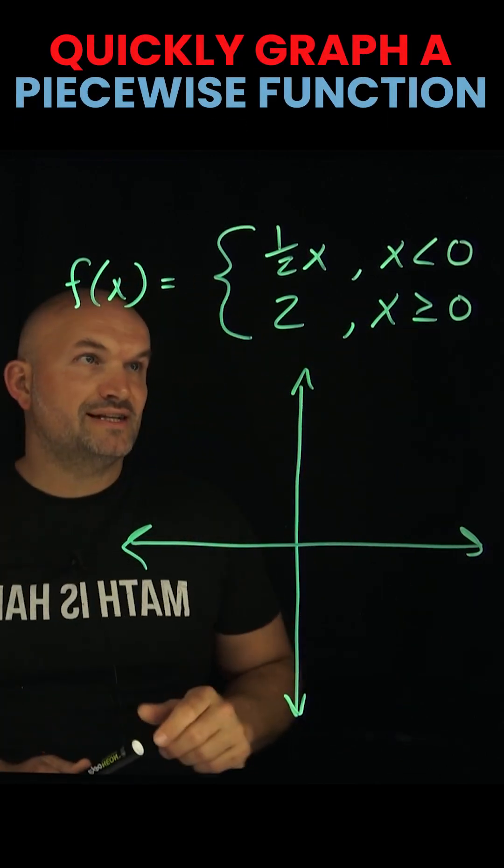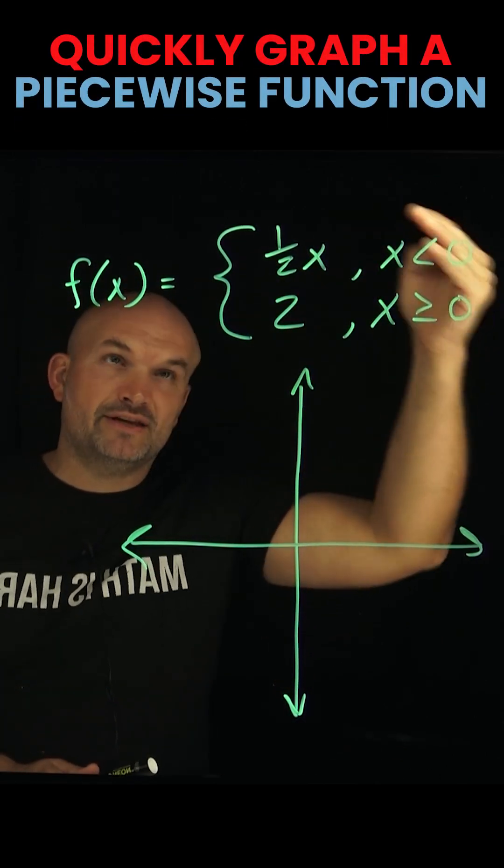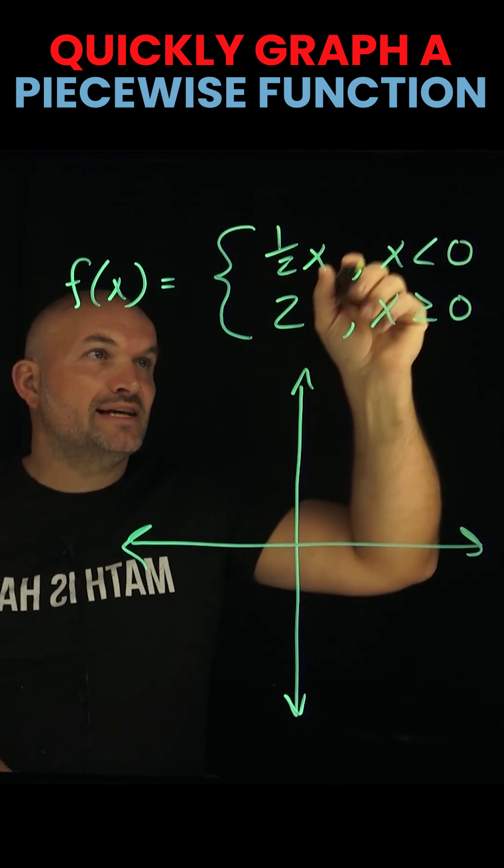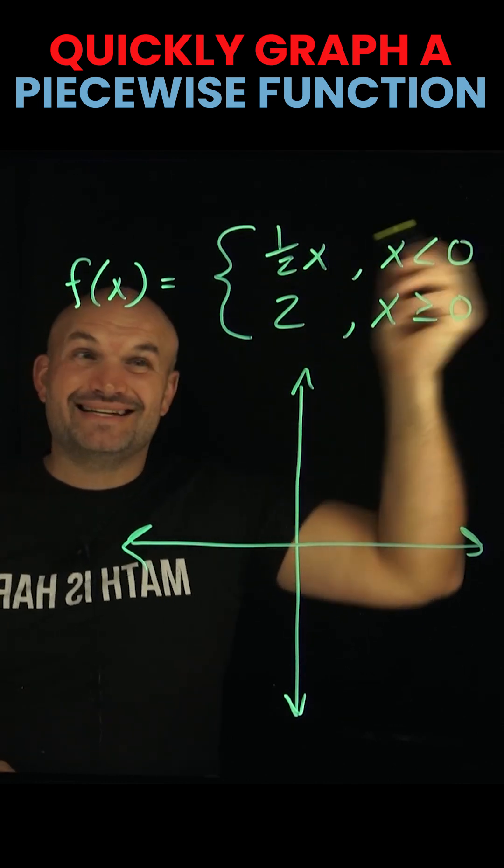All right, so the best way to graph a piecewise function like this is to understand the rules and constraints. This has (1/2)x which is true for x values less than zero.